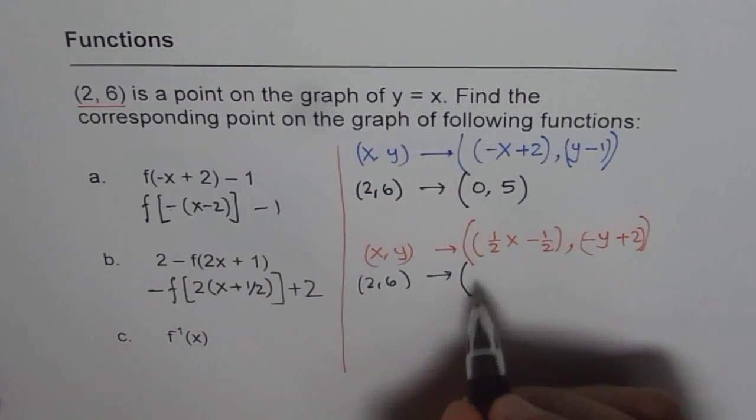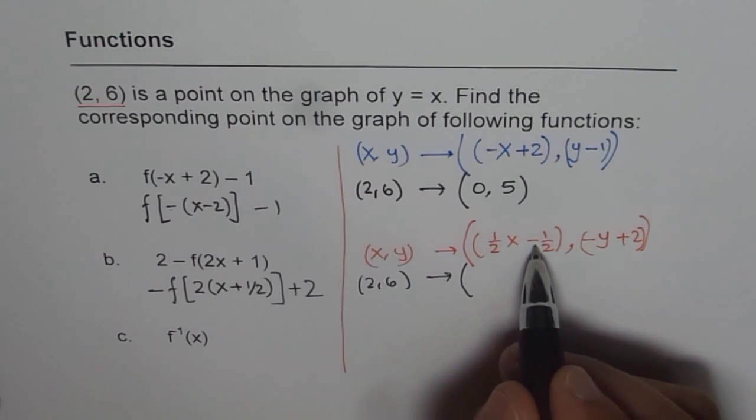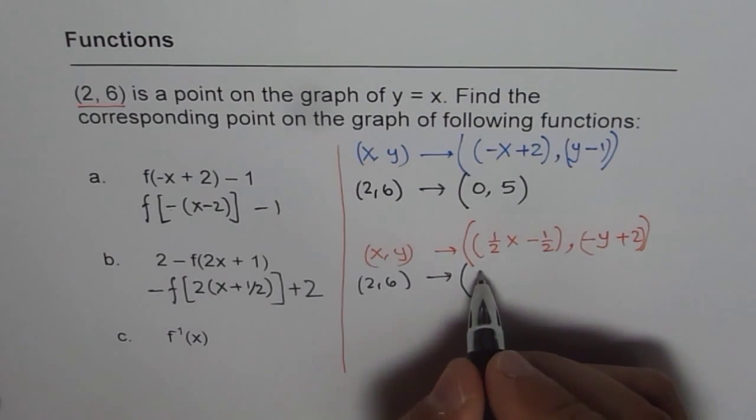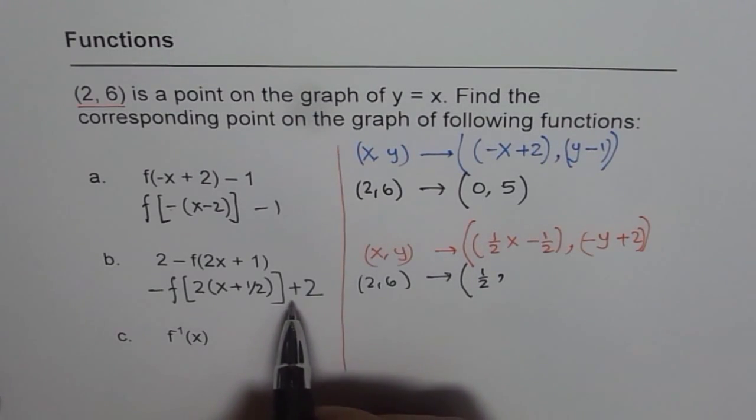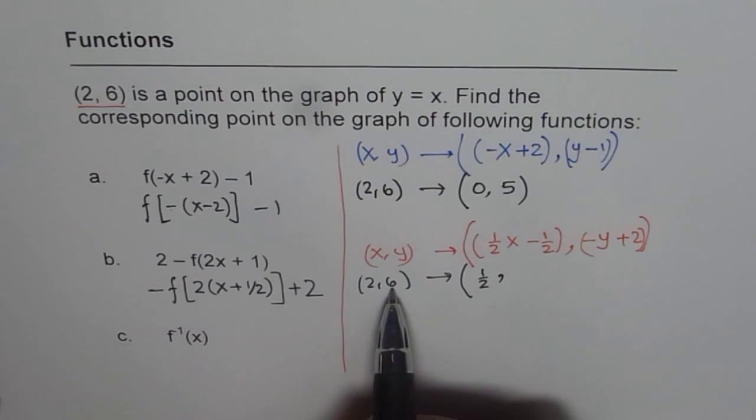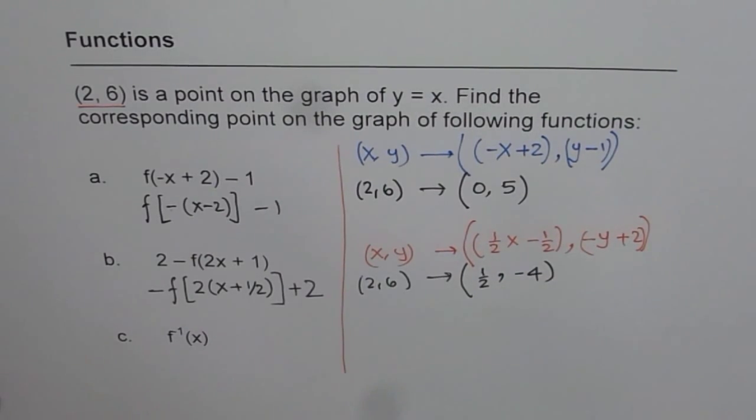What happens? For the x, half of 2 is 1 and 1 minus half is half. So we get half. As far as y point is concerned, we have to do negative of 6, which is negative 6. Plus 2 will give us negative 4. So that is the new image point.